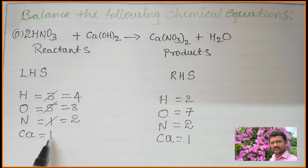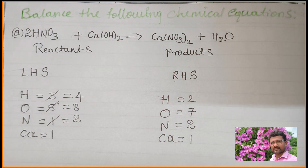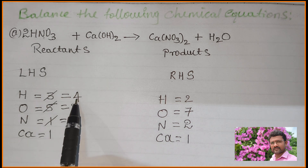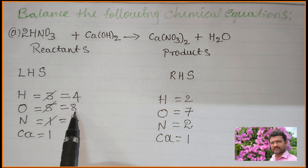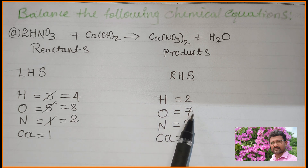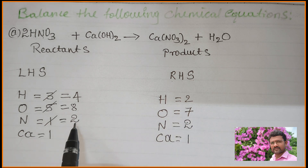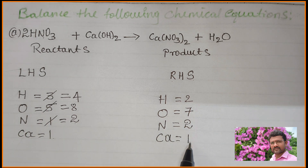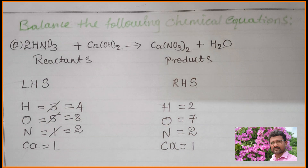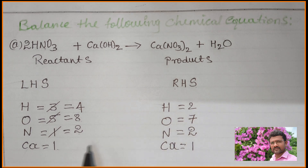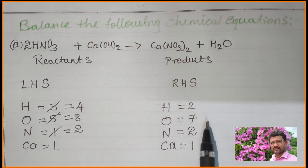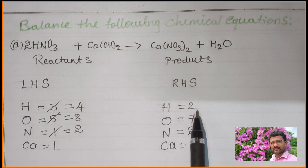Calcium is unchanged — leave it. Now cross-check: LHS 4 hydrogen, RHS 2 hydrogen — not yet balanced. LHS 8 oxygen, RHS 7 oxygen — not balanced. Nitrogen: LHS 2, RHS 2 — balanced. Calcium: 1 and 1 — balanced. Oxygen and hydrogen still need to be balanced. The right side is less, so we need to increase the number on the right side.